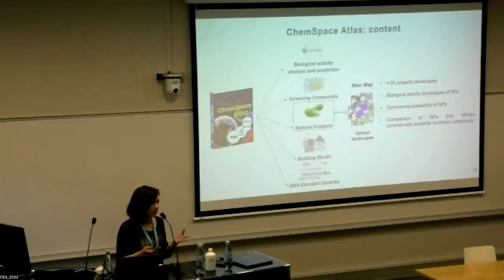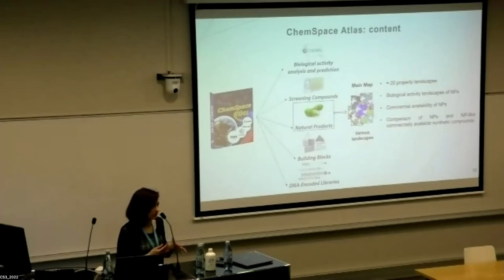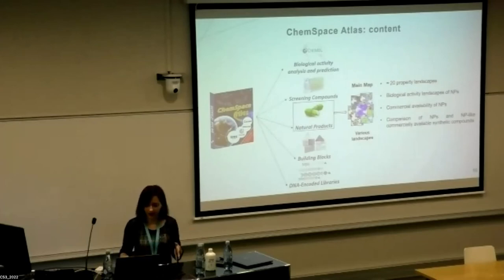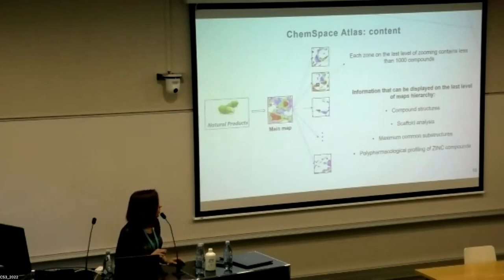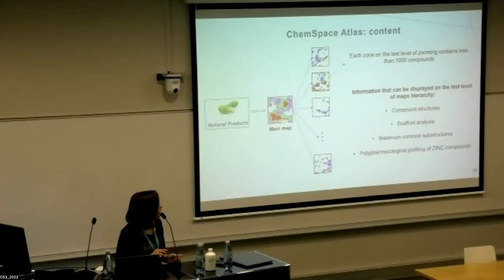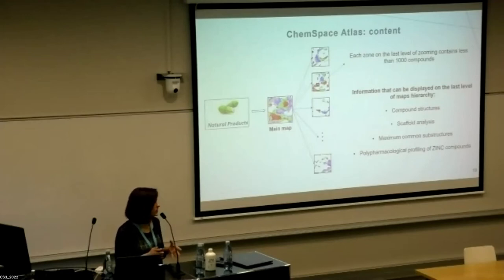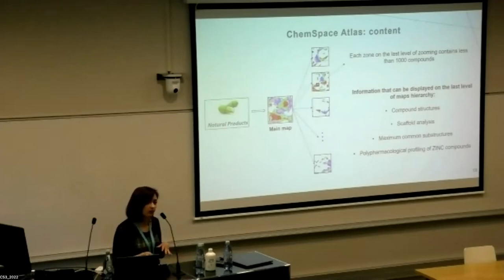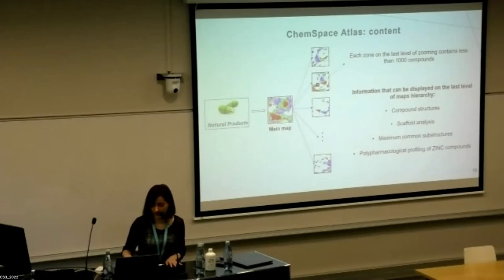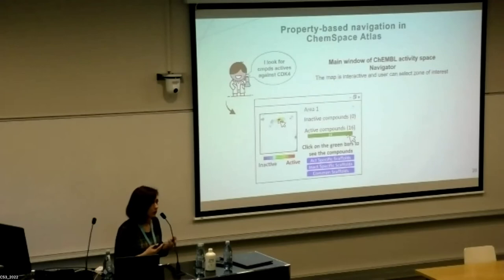The main map can be colored according to different properties — calculated properties, biological activities, commercial availability — and it's always interactive. You can navigate through the hierarchy of maps. At the last level of hierarchy, when fewer than 1000 compounds remain, you can view compound structures, scaffolds, maximum common substructures, and do polypharmacological profiling for ZINC compounds.